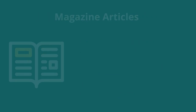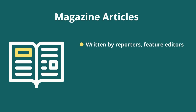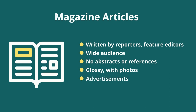In contrast, let's take a quick look at magazine articles. These are usually written by reporters or feature editors who may not be experts on the subject they're writing about. The articles are focused towards a general audience and use common language choices. They do not have an abstract or a list of references. The final detail that always indicates popular magazine articles are the glossy photographs and, of course, advertising.